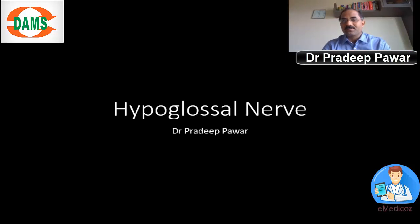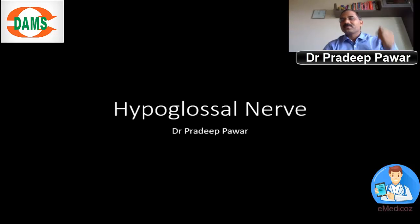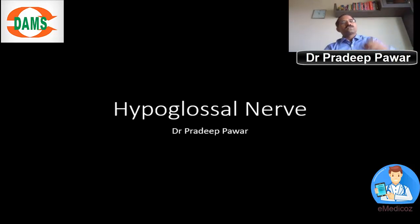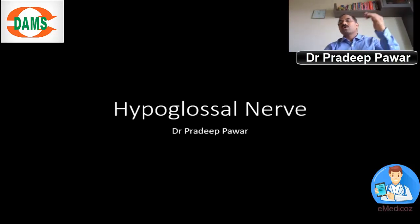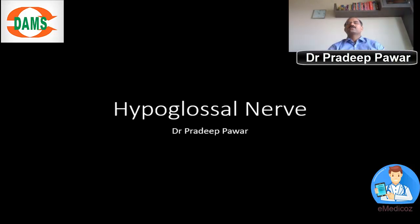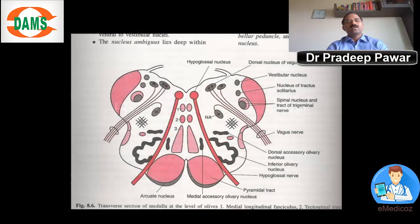The general somatic efferent component supplies the muscles derived from occipital myotomes. These muscles are the extraocular muscles and the tongue muscles. The hypoglossal nerve supplies all the muscles of the tongue except palatoglossus. So the component it carries is the general somatic efferent component.